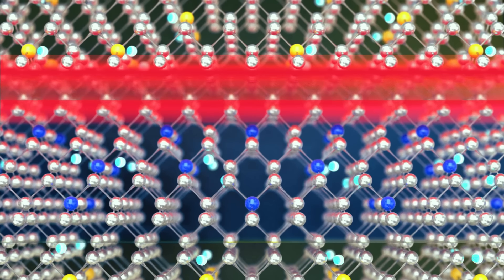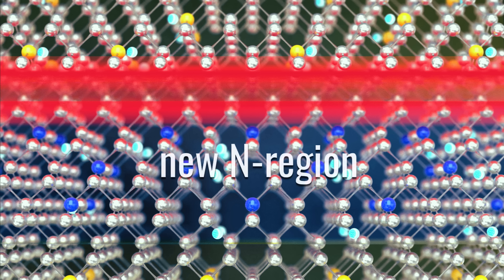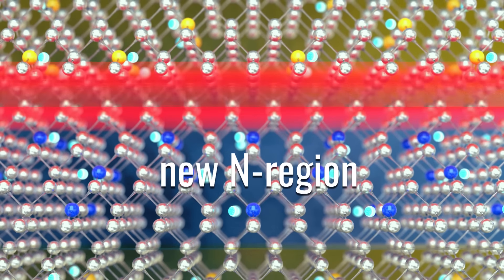The electrons have now become majority charge carriers in this region. In short, the p-region eventually becomes an n-region. This new n-region will cause the depletion region to automatically diminish.